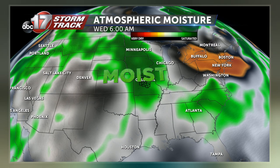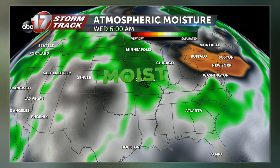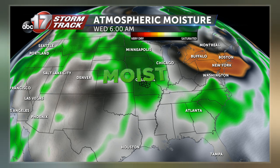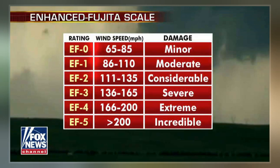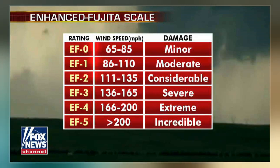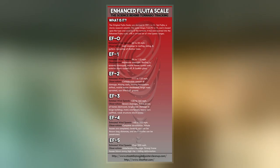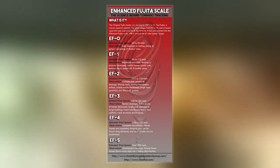An F unknown category was later added for tornadoes that cannot be rated due to a lack of damage evidence. The newer scale was publicly unveiled by the National Weather Service at a conference of the American Meteorological Society in Atlanta on February 2, 2006.